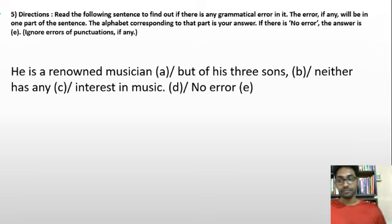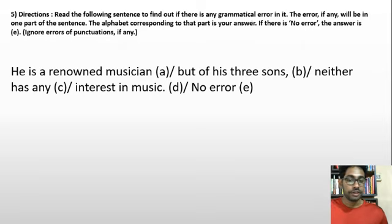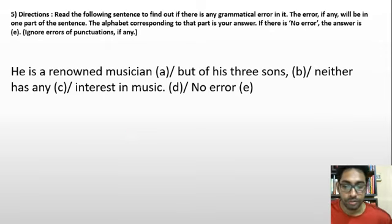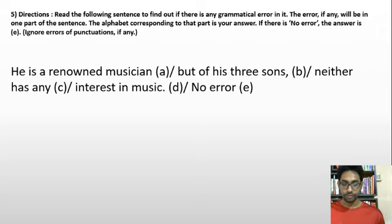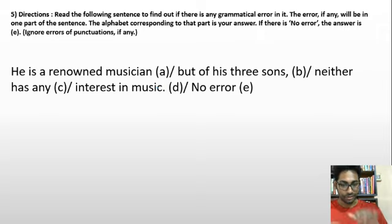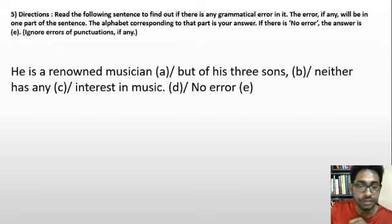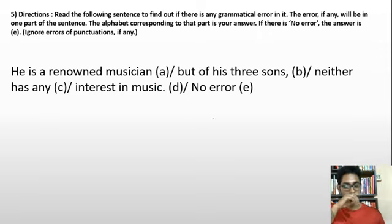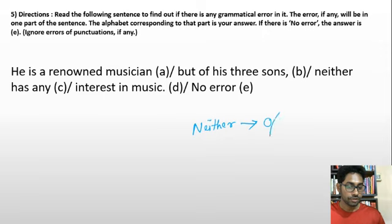Now we have an error correction question. Read the following sentence to find out if there is any grammatical error. If there is no error, mark 'no error.' Sentence: 'He is a renowned musician. But of his three sons, neither has any interest in music.' First, understand: neither means zero out of two. Either means one out of two. Both means two out of two.